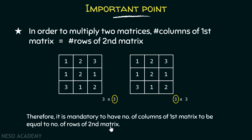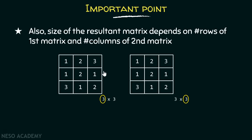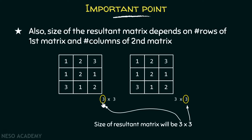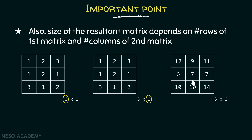The second point: the size of the resultant matrix depends on the number of rows of the first matrix and the number of columns of the second matrix. We have already seen that in this case, the size of the resultant matrix is three cross three, which is the resultant matrix we obtained.